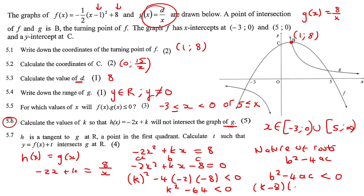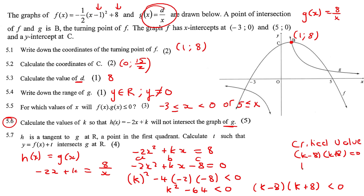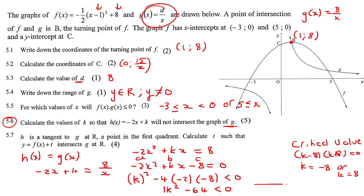Using difference of squares: (k − 8)(k + 8) < 0. Setting equal to zero for critical values gives k = −8 or k = 8. This is a happy parabola in k, and we want it below zero, which is between the roots. So the answer is −8 < k < 8, or in set builder notation: k is an element of (−8, 8).